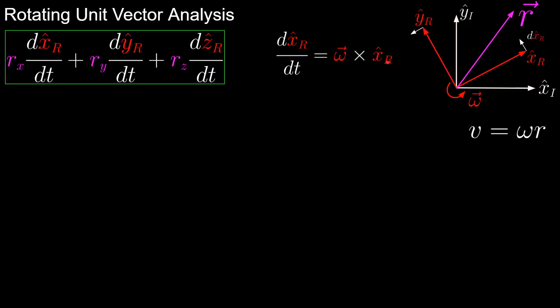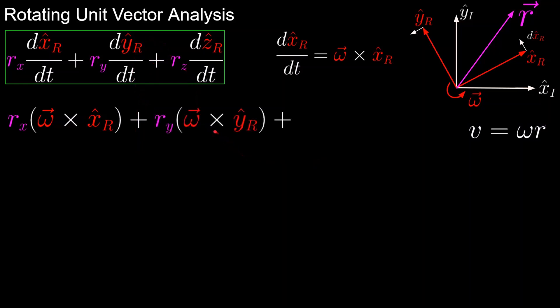We'll add the omega cross x-hat_r to our new expression, and now we move on to the derivative of the y unit vector. Again, applying the right-hand rule, we see that the derivative is omega cross y-hat, and same for the z direction. In this case, the derivative of z is 0 since z-hat and omega are parallel, but we'll keep the expression in here for the general case.